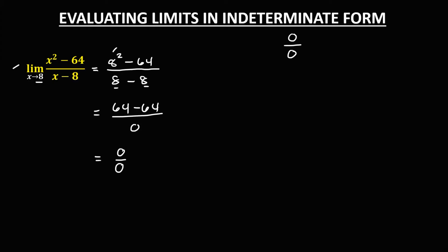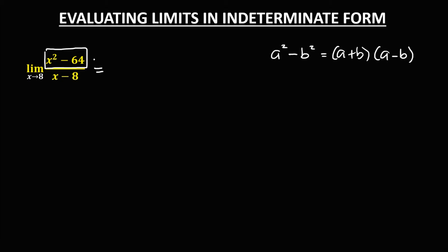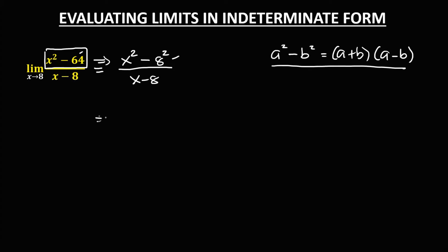In this case, we need to simplify the equation first using factoring. For the numerator, we can use the difference of two squares. If we have a squared minus b squared, we can factor it as (a + b)(a - b). For this given, we rewrite the numerator as x squared minus 8 squared, then factor it as (x + 8)(x - 8) over (x - 8).